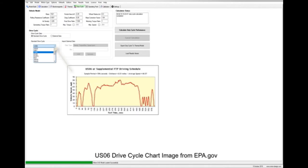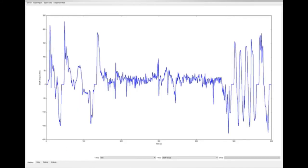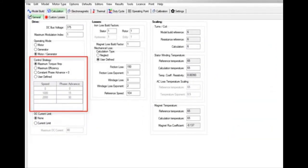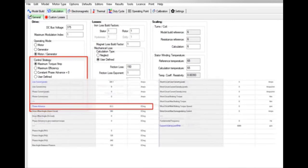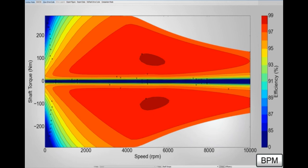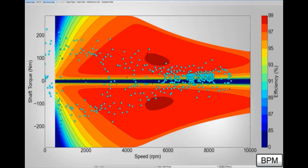The Lab model in MotorCAD enables the analysis of a machine's performance over its full operating range. It applies control strategies to automatically calculate the optimum phase advance angle. Outputs such as efficiency maps, torque speed curves, loss maps and drive cycles are rapidly generated.